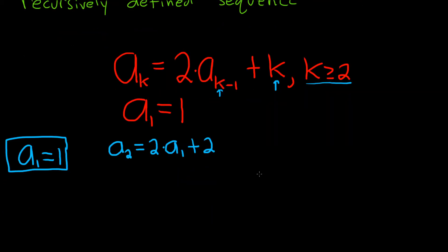The trick is we know a sub 1. a sub 1 is 1, so this equals 2 times 1 plus 2. So we end up with 2 plus 2, which is 4. Now we have the second term, a sub 2 equals 4.